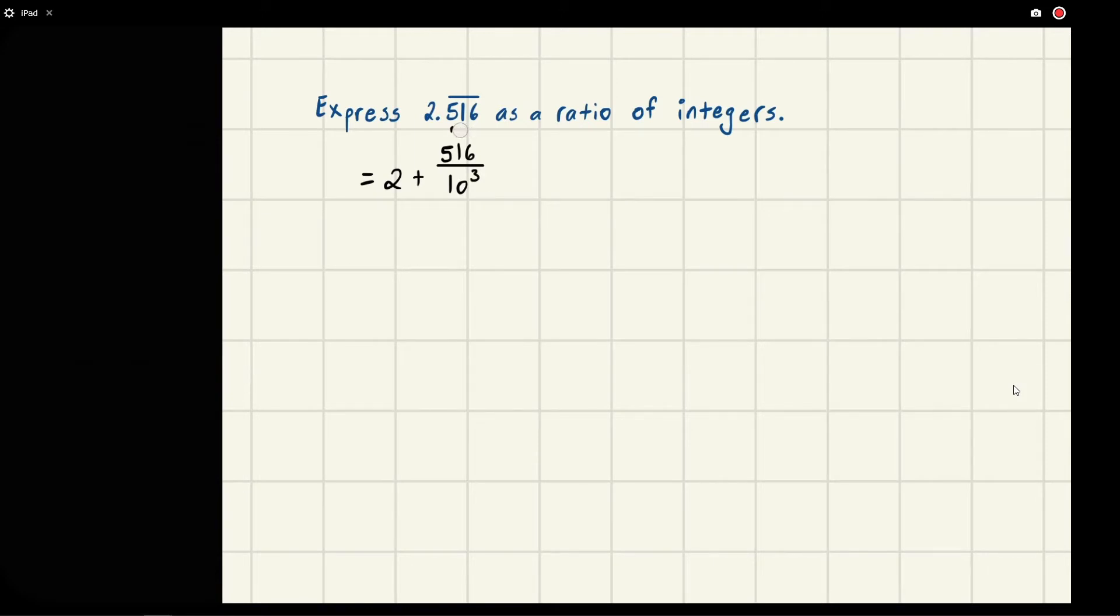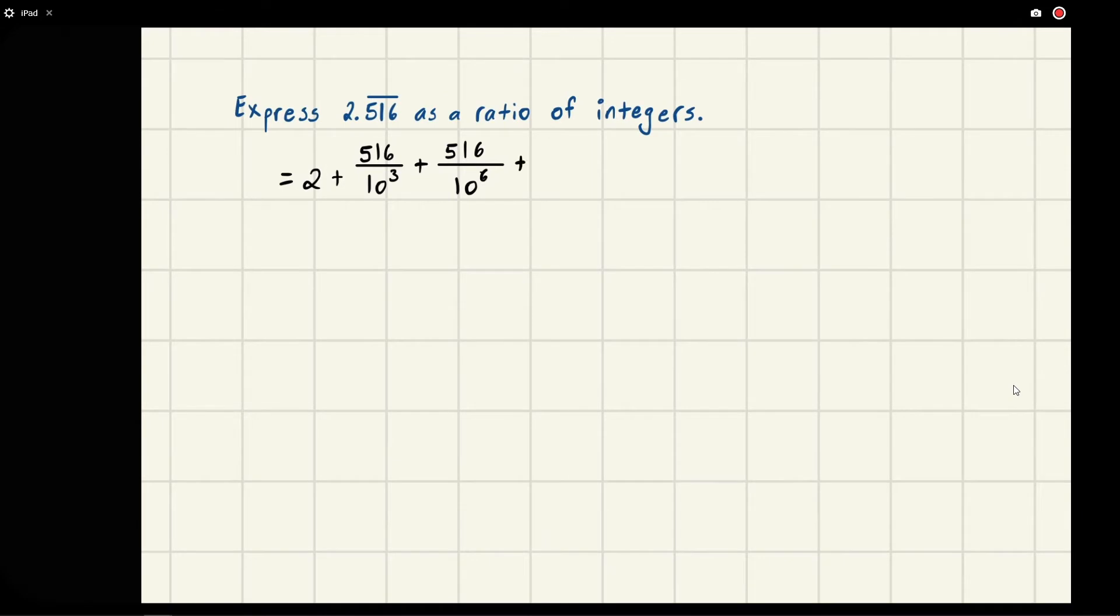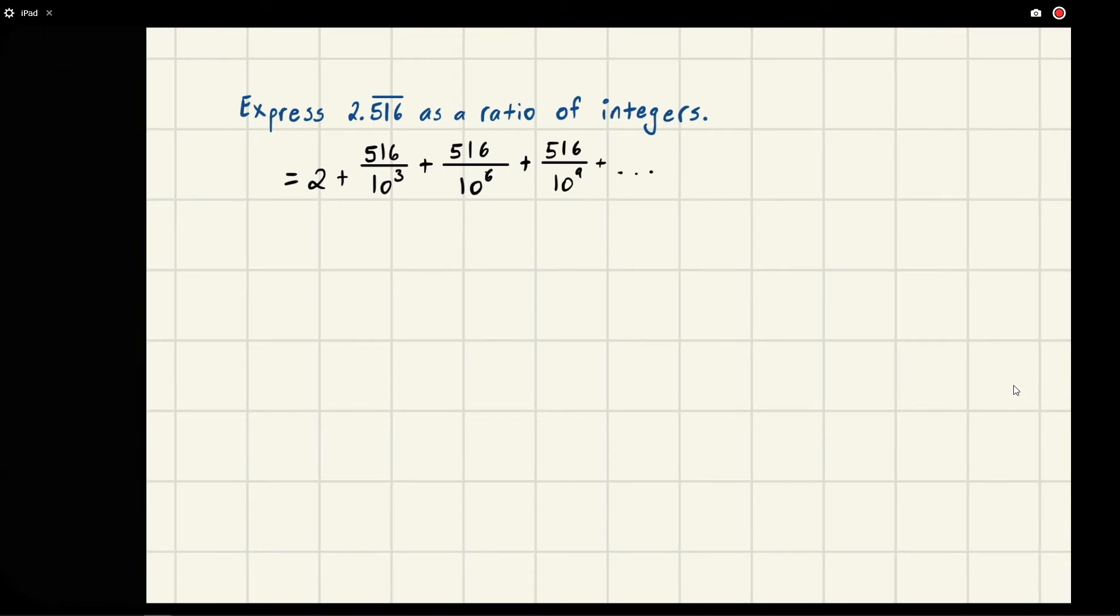If we divide 516 by 10 to the 3, we get 0.516, and then it repeats. We have another 516, and we went back three more decimal spots, so that puts us at 10 to the 6. We keep going: 0.516, another one at 10 to the 9, and on and on.